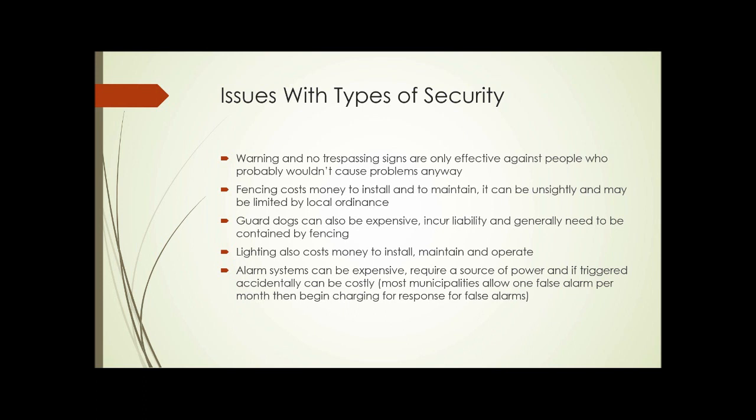We'll talk about the issues with each of these types of security and how we might utilize security to make our sites safer. Warning and no trespassing signs, for instance, are only effective against people who probably wouldn't cause problems anyway. Curious people who might walk through your agricultural site and take a look at things will probably stay away if there are no trespassing signs, but someone intent on causing trouble is probably going to ignore the sign.